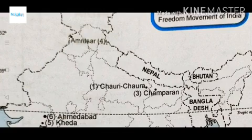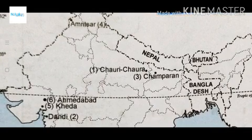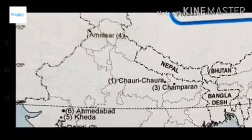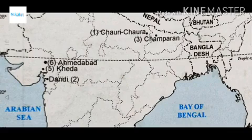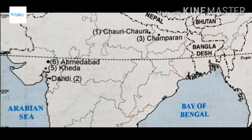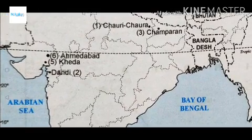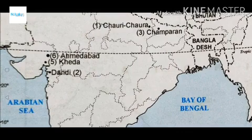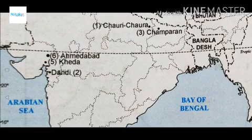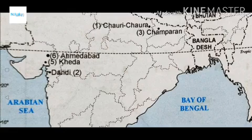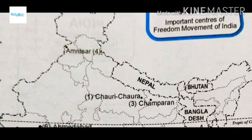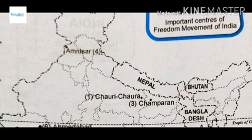On the map: Chauri Chaura is near Nepal, in eastern Uttar Pradesh near Gorakhpur. Champaran is right next to it in Bihar. Dandi is in Gujarat. To remember Ahmedabad, Kheda, and Dandi — on the map where Gujarat curves, going along the state line you find Ahmedabad, then below it Kheda, and at the bottom Dandi. You can use the mnemonic EKD — Ahmedabad, Kheda, Dandi. Jallianwala Bagh is in Amritsar, near the Golden Temple, near the curve toward Pakistan.